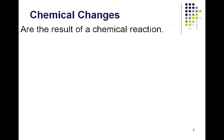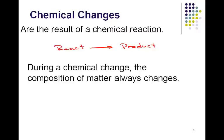Our chemical changes, these are the results of a chemical reaction. So again we're talking about the creation of something new. We're going to take a reactant or a couple of reactants and create a product. During this chemical change, the composition of matter always changes. So for example, if we were to take sodium and add it to chlorine. Chlorine is actually Cl2. These two things are our reactants.